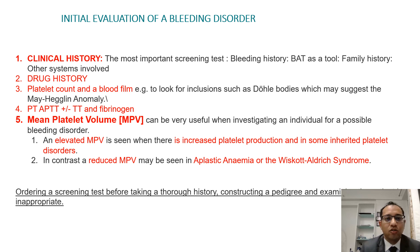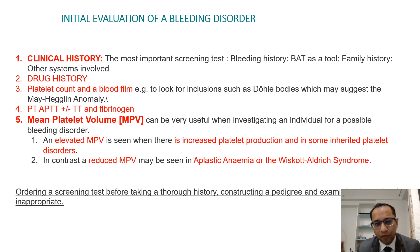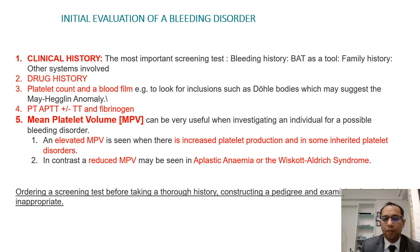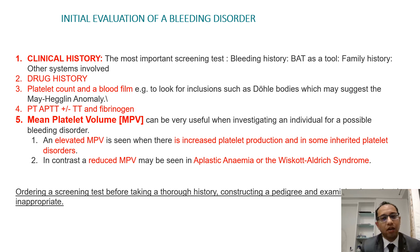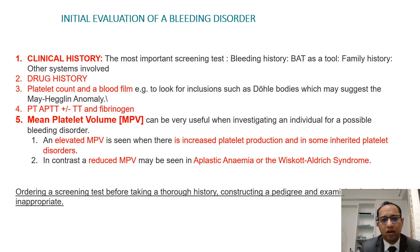Platelet count and blood film are absolutely necessary whenever you have a bleeding disorder, along with secondary hemostatic tests like PT, APTT, and plus or minus thrombin time and fibrinogen depending on clinical evaluation. Mean platelet volume (MPV) has also gained importance: elevated MPV is seen with increased platelet production and in some inherited platelet disorders, while reduced MPV is seen in conditions with decreased platelet production like aplastic anaemia or Wiskott–Aldrich syndrome. Do not go for any screening test without taking a proper history and examining the patient properly.